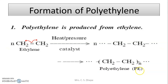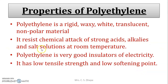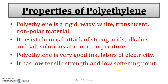This is polyethylene, also called PE. Its properties: it is a rigid, waxy, white, translucent, non-polar material. It is resistant to attack by strong acids, alkalis, and salt solutions at room temperature. Polyethylene is a very good insulator of electricity. It has low tensile strength and a low softening point — meaning it becomes soft on heating relatively easily.